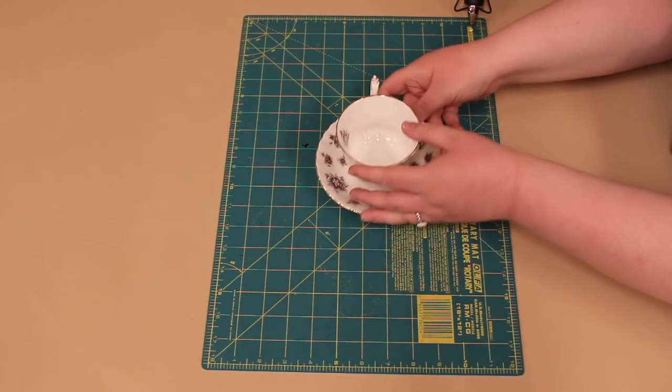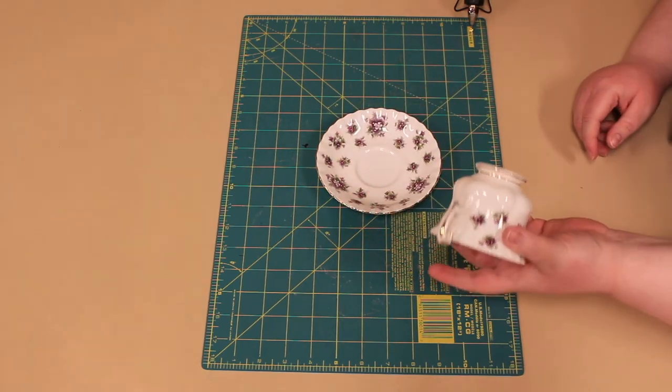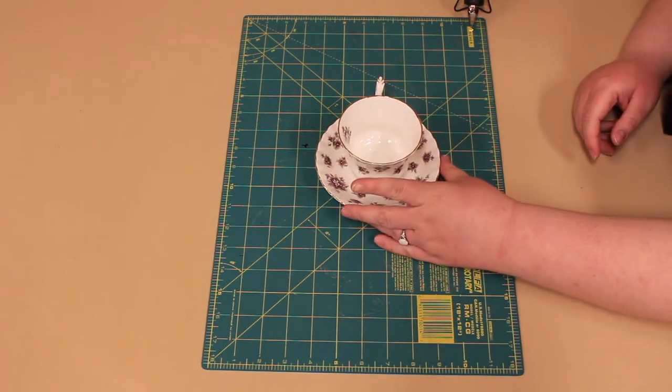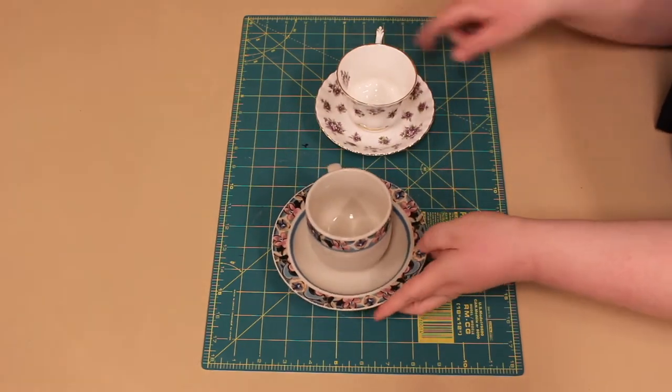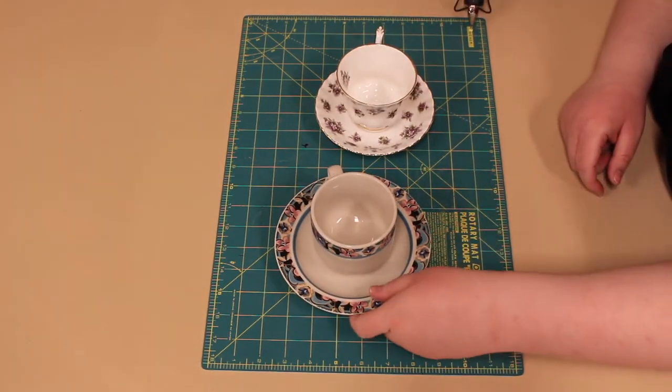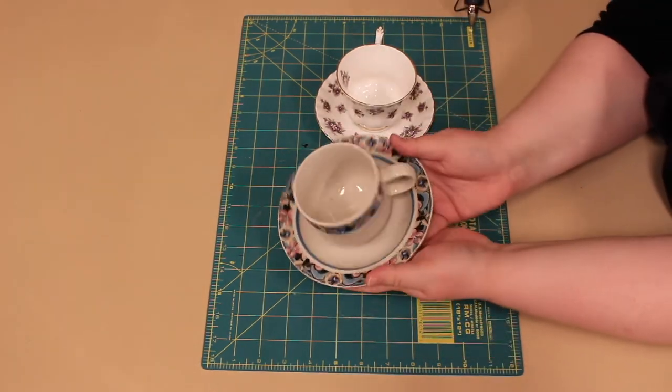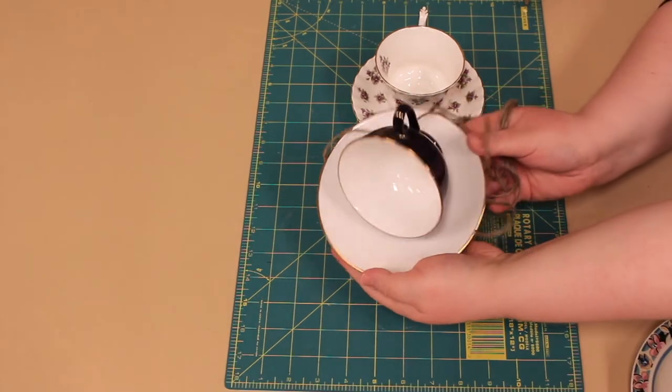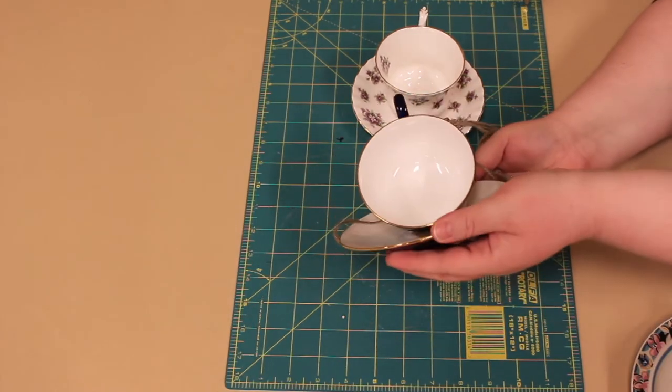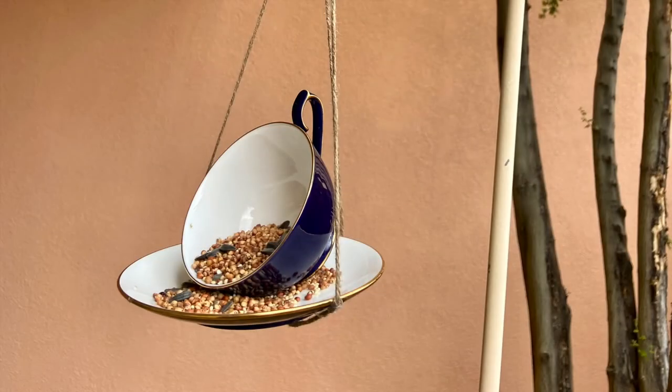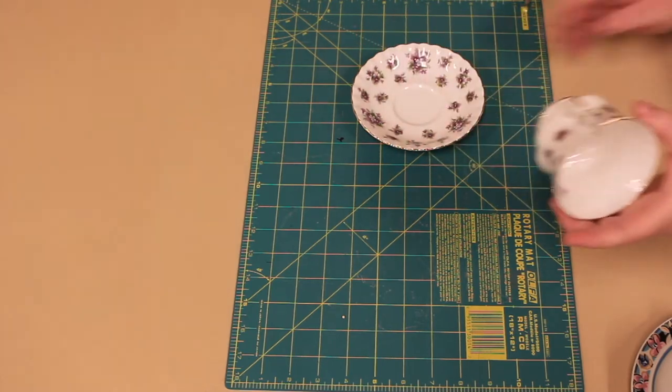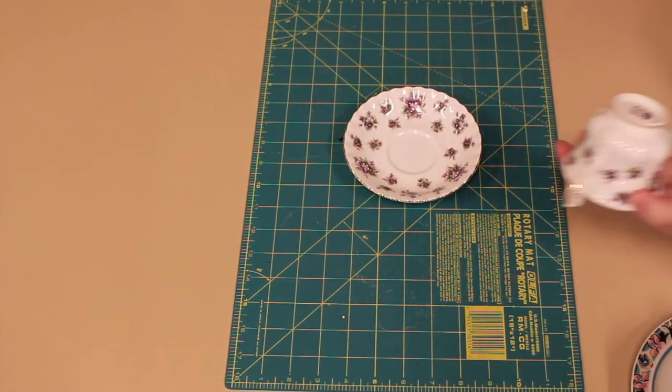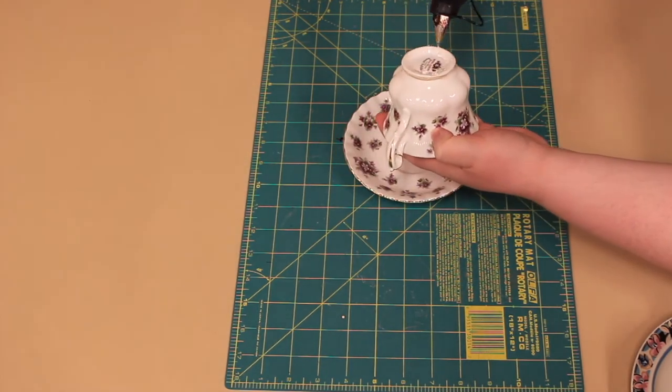To start, you will need to glue the teacup to the saucer. You have a couple of options here. One method may work better depending on the size and shape of the cup. You can either glue the teacup directly on top of the saucer, like this, or you can glue the teacup at an angle on the saucer. If you do this, be sure to glue the cup towards the back half of the saucer, so there is room for the bird seed to spill out in front of the cup. Now, let's get started. For this example, I will be gluing the cup directly on top of the saucer.